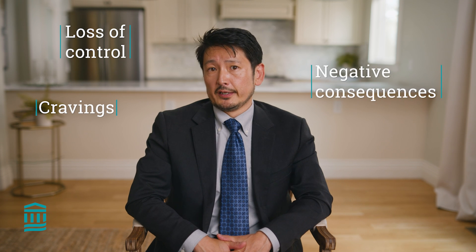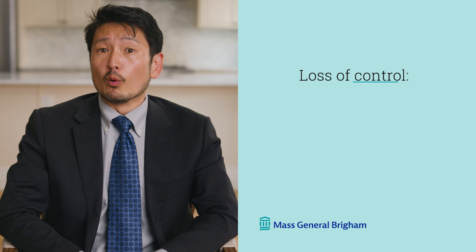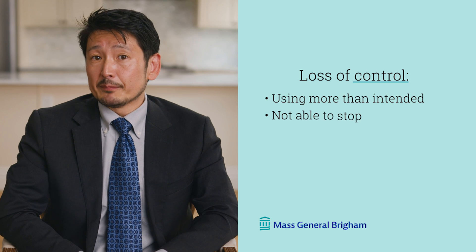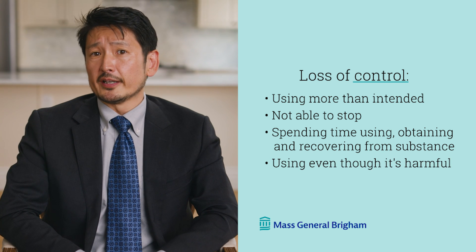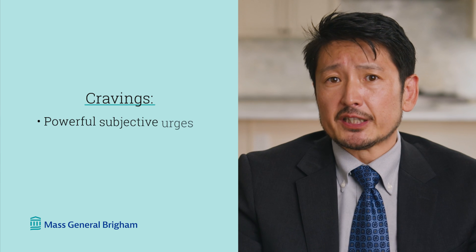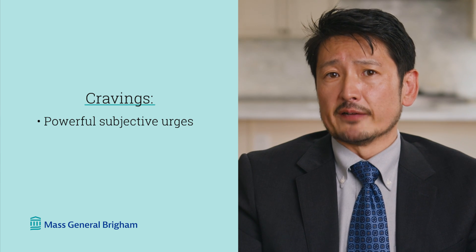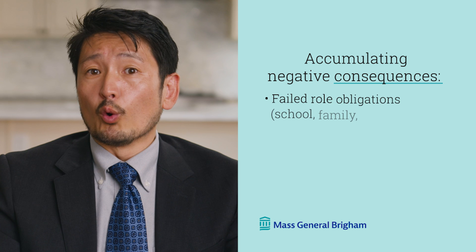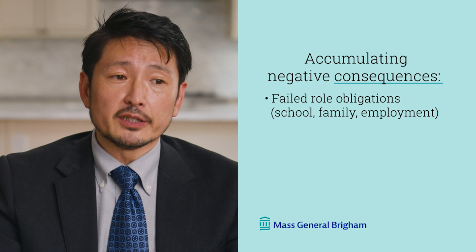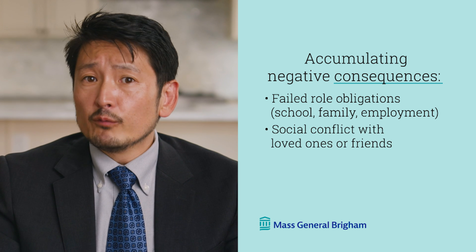How is opioid addiction diagnosed? We diagnose basically by talking to patients to obtain information about how they're using opioids. The things we look for are the three C's: loss of control, cravings, and accumulating negative consequences. That means the person is using more opioids than intended, not able to stop even if they tried, spending a lot of time using, obtaining, and recovering from the substance, and using despite knowing it's harmful. For cravings, these are subjective urges so powerful that they drive a person to keep using. For negative consequences, we look for failed role obligations in school, family, or employment, and social conflict with loved ones or friends.